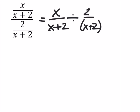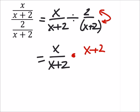I didn't really need the parentheses there. My first term doesn't change, x over x plus two, but I'm going to change this to multiplication by reciprocating that second term, so I've got x plus two over two.